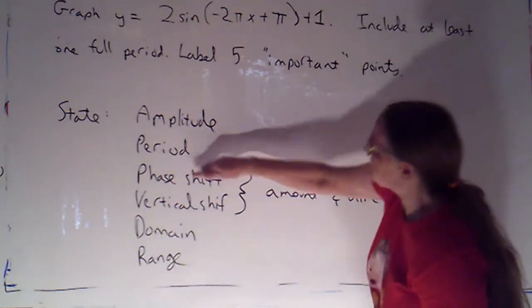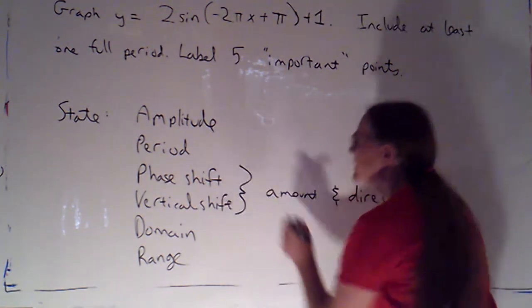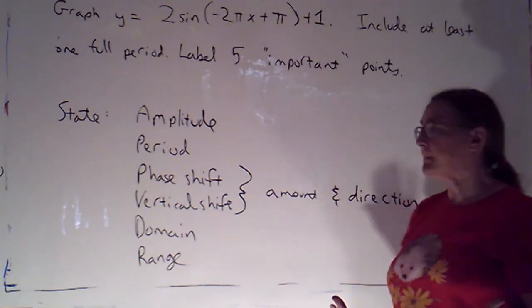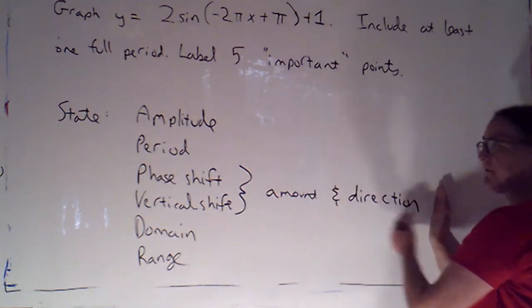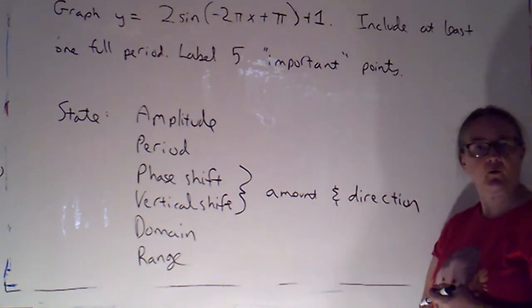And then I'm also asking you to give me some information about this function and its graph. So I want you to state the amplitude, the period, phase shift, and vertical shift. We talked about those in the last video. And notice I specified for the two shifts I want the amounts and the direction.